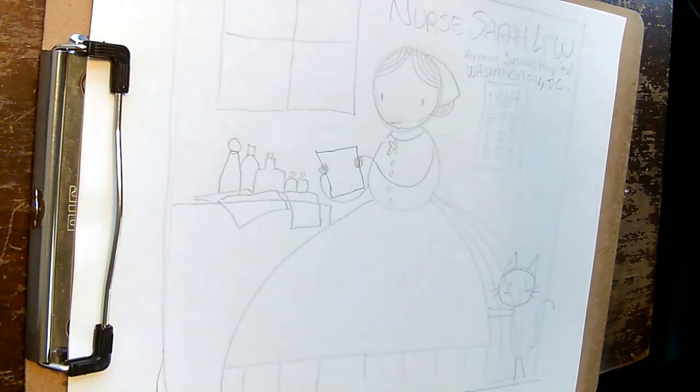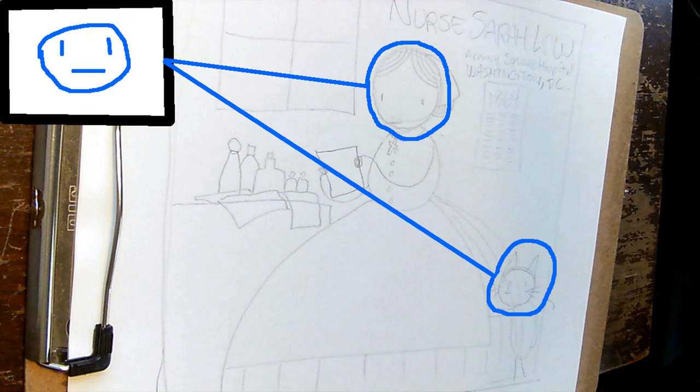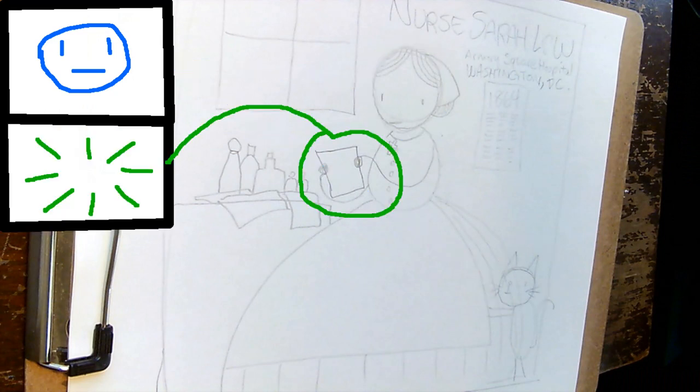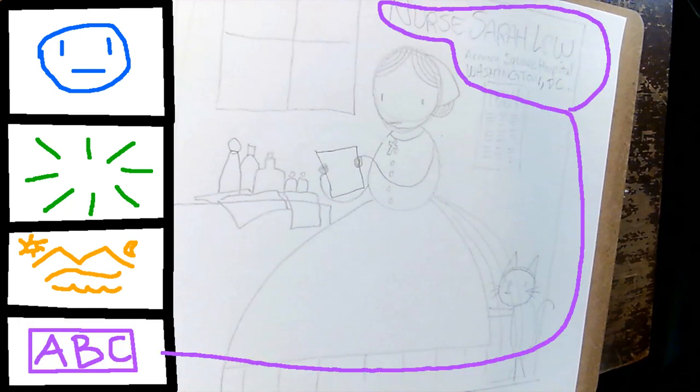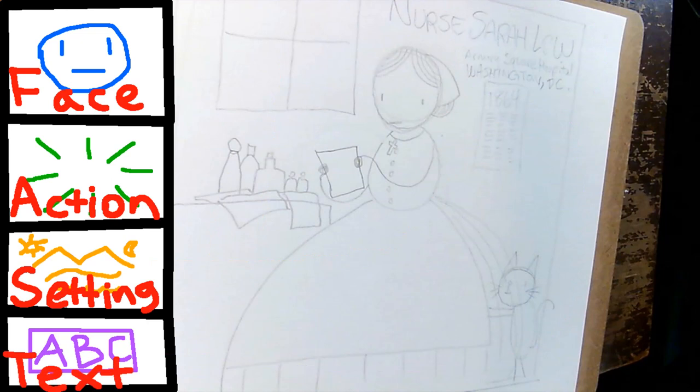Okay so let's see, we made sure we included faces, we made sure we have some actions, she's doing something here, we have some setting details and we have some text. That means we have FAST, the FAST tools, and we are ready to ink.